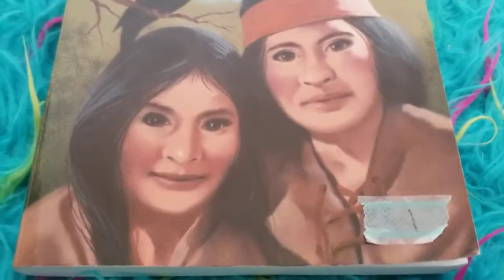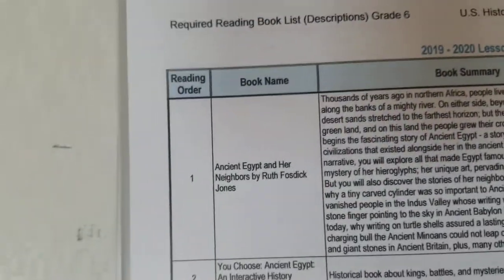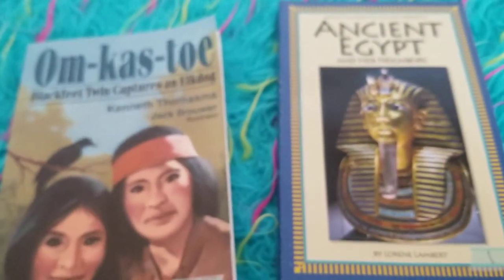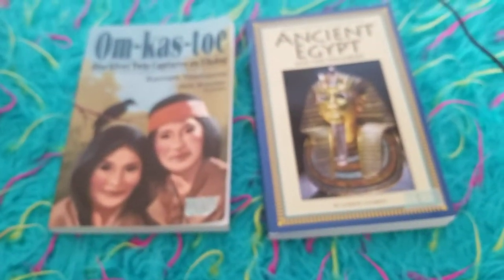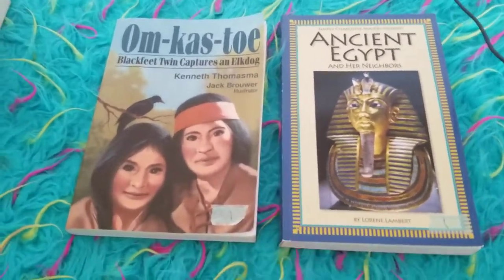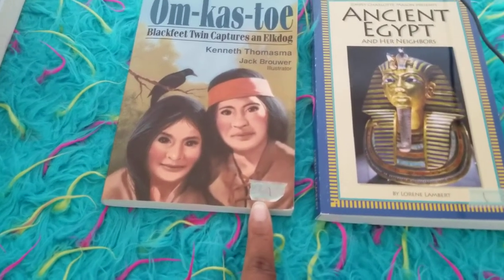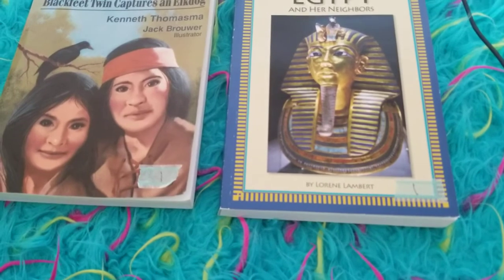If you look at our ancient history — world history — it says number one for that book as well. This is the first book we're reading for American history, specifically U.S. history, and this also says number one, which is the first book we are reading for world history — ancient times this year. What that means is we can read these books together.